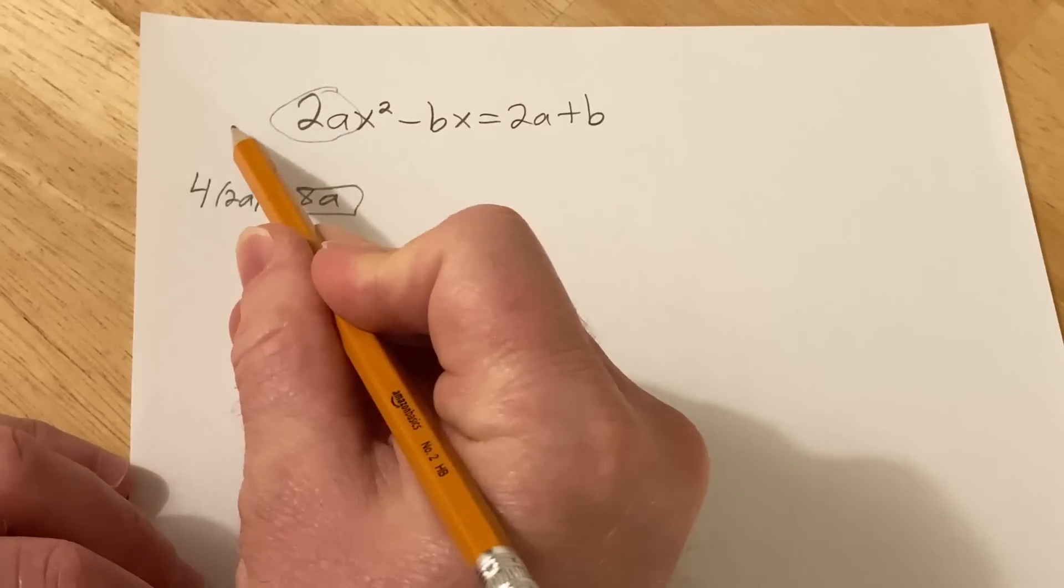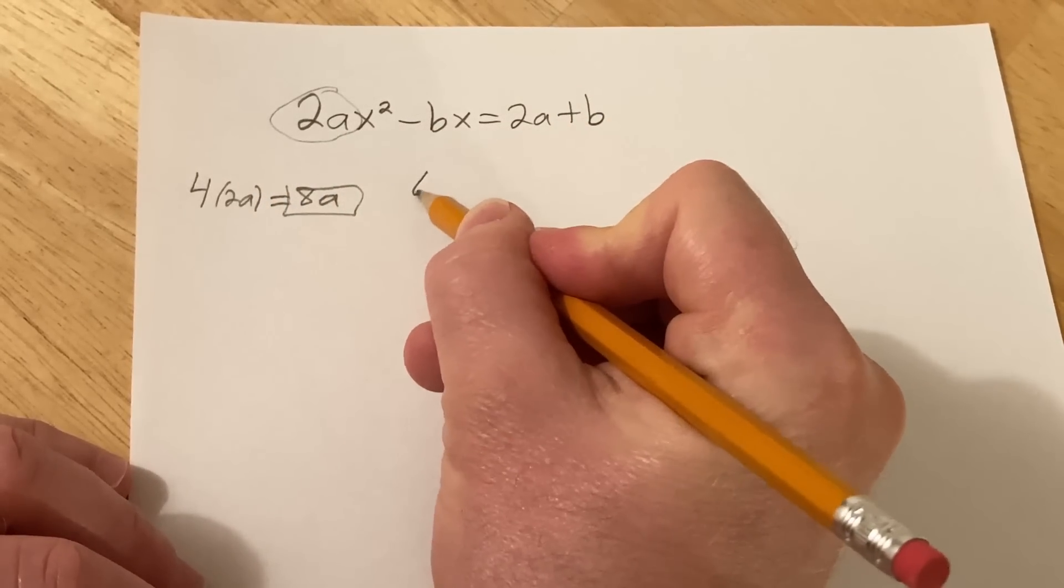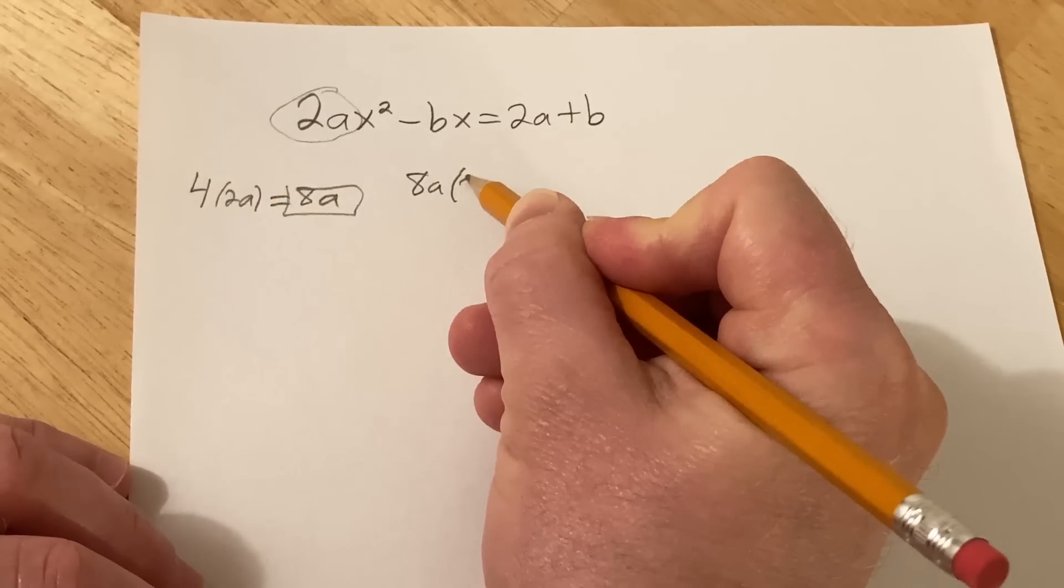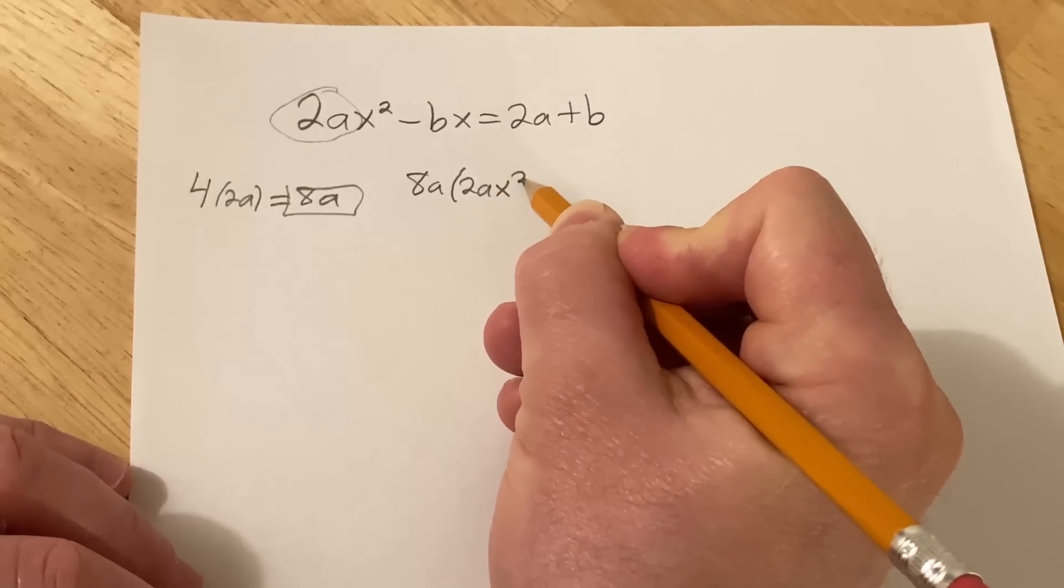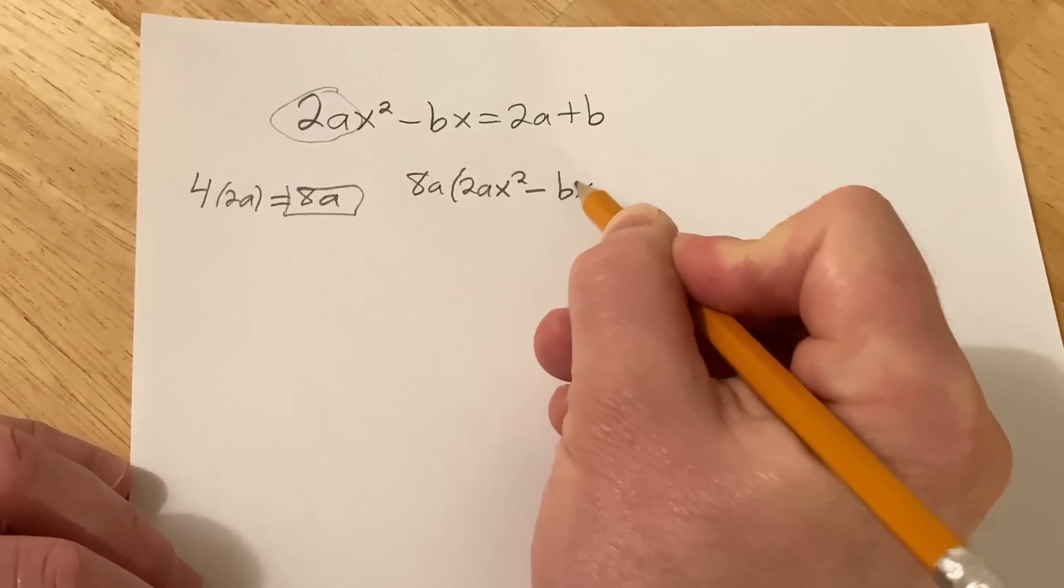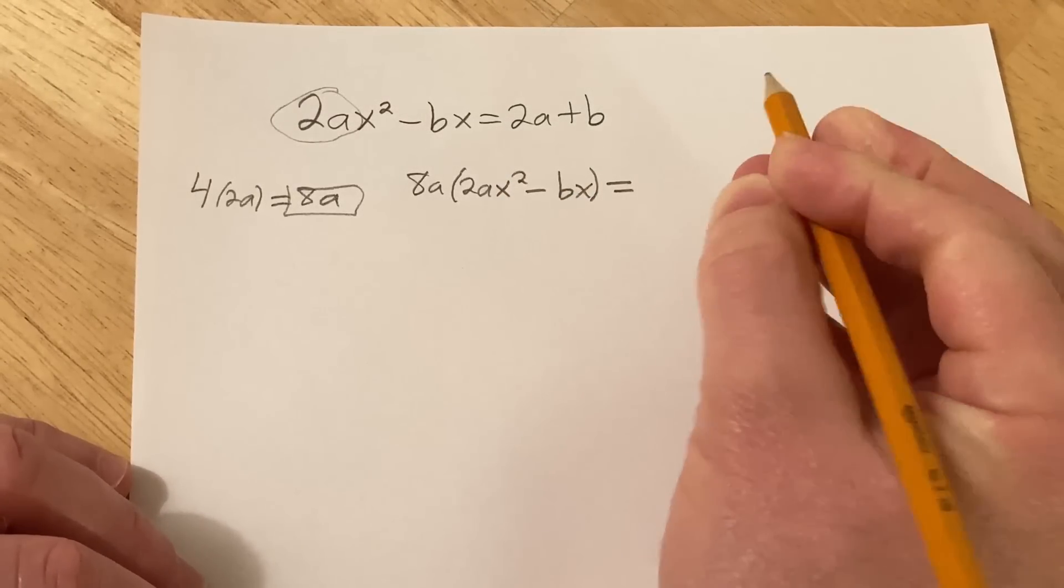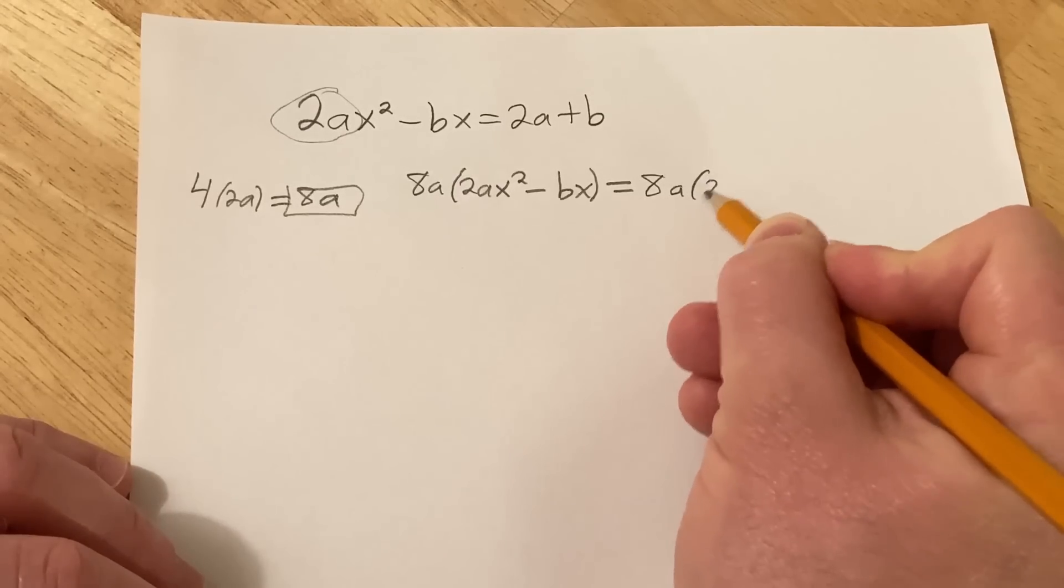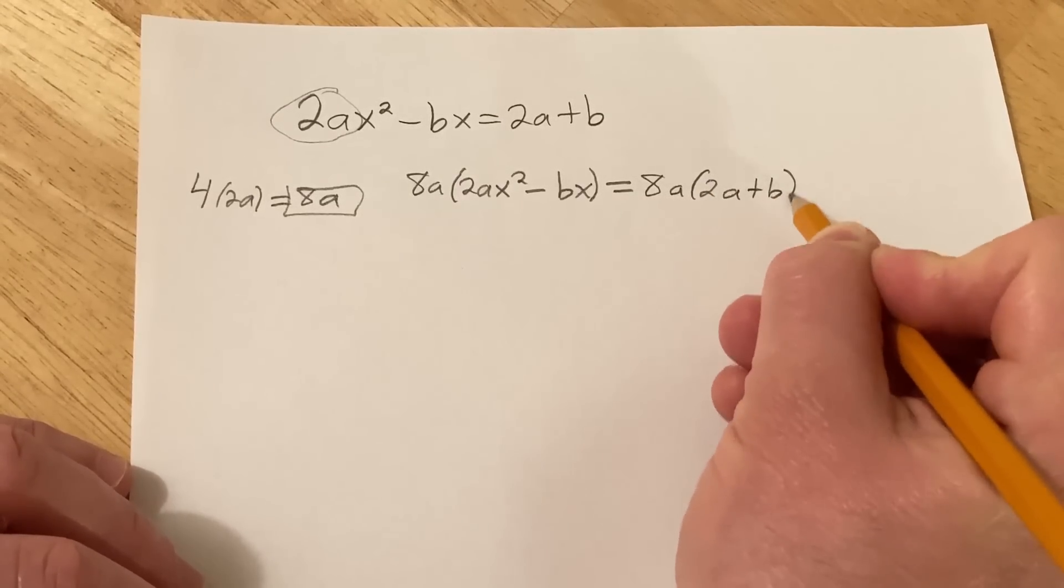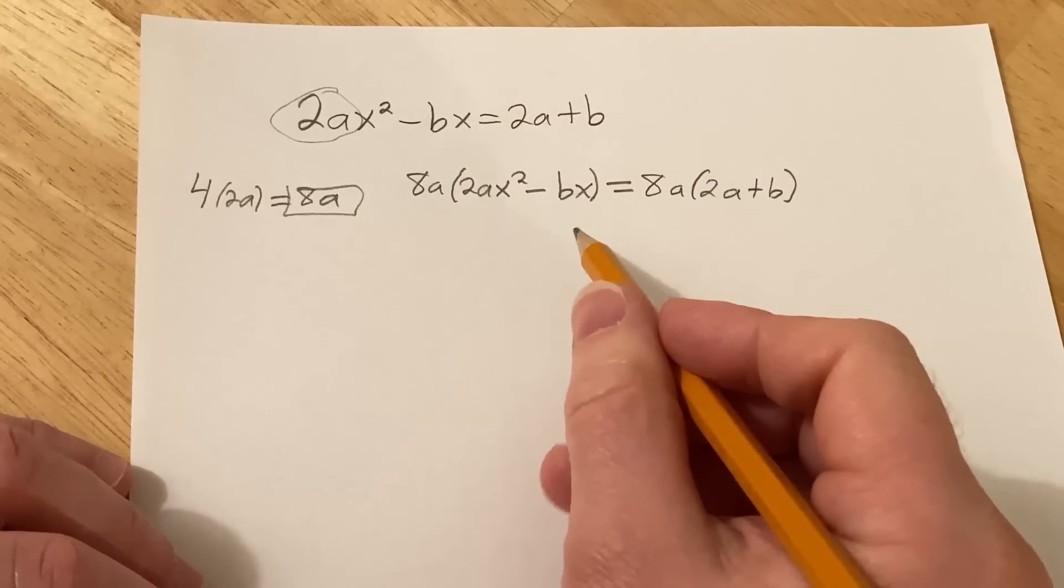Now you take the 8a and you multiply it through across everything. So we have 8a parentheses 2ax squared minus bx. I'm going to go a little bit slower this time because I haven't done this. And there's variables everywhere, so hopefully it works out okay.